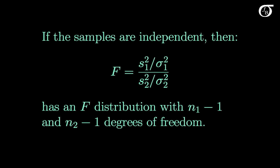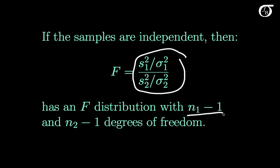If the samples are indeed independent, then this statistic here has an F distribution with N1 minus 1 degrees of freedom in the numerator, and N2 minus 1 degrees of freedom in the denominator. We're going to use that idea to come up with the confidence interval for that ratio of population variances.